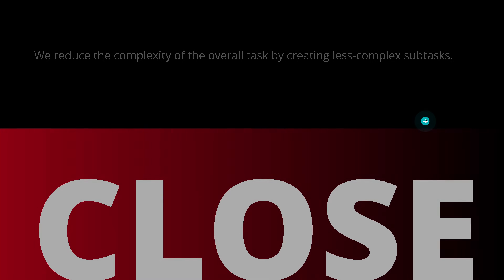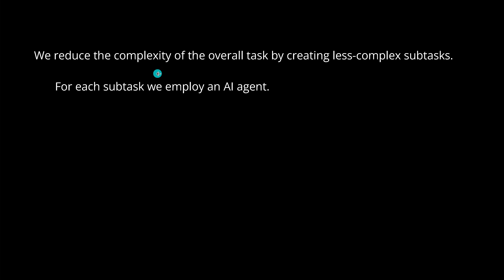I never thought I would do my next knowledge graph update with nine AI agents — I thought two or three were enough. Well, I was wrong, and I learned. In summary: I reduced the complexity of the overall task by creating less complex subtasks, and for each subtask I employed an AI agent. We defined a specialized agent, defined a prompt — using prompt engineering, DSPy, or whatever you like — and obtained the optimal prompt for this specialized, domain-specific agent with domain-adaptive prompts.